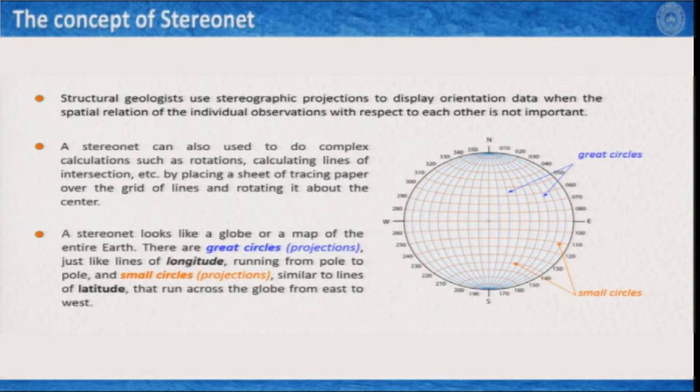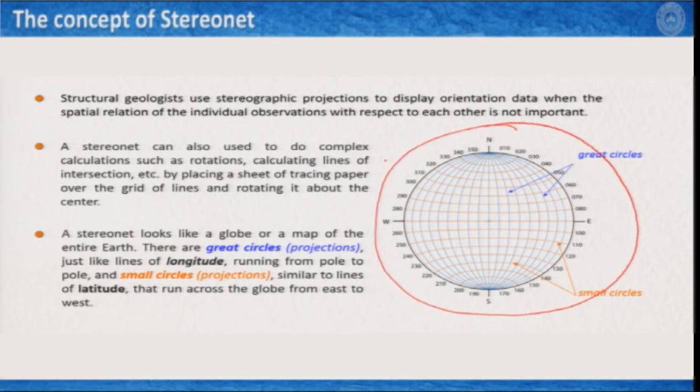In addition, a stereonet can also be used to do complex calculations such as rotations and calculating lines of intersections. In general, what we see in the stereonet essentially looks like the globe in plane and it has some grids.